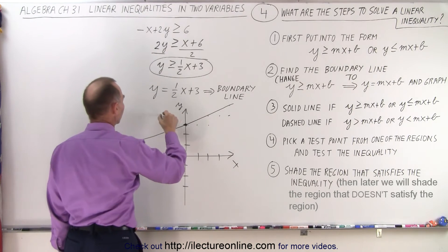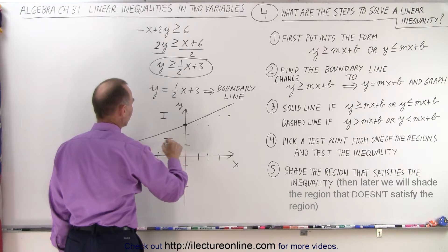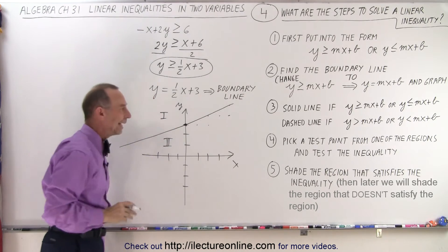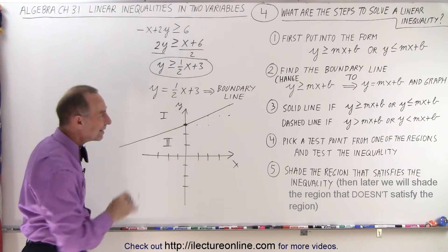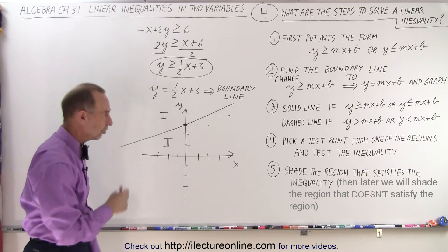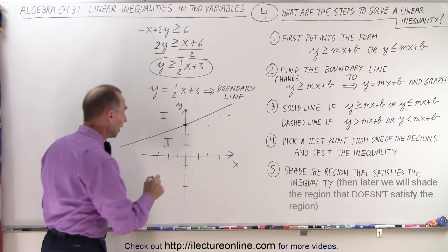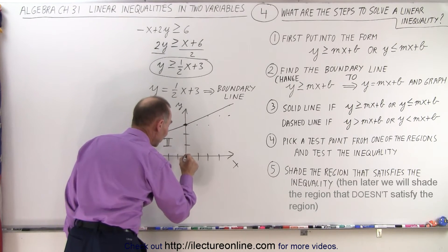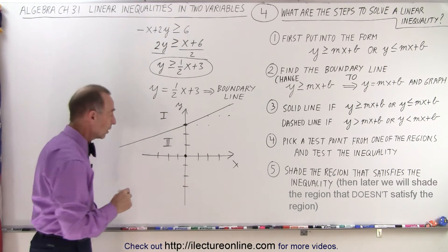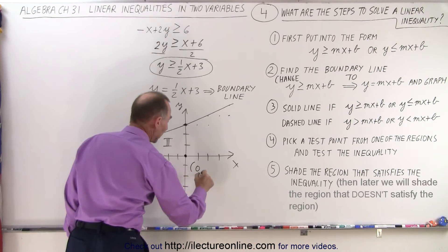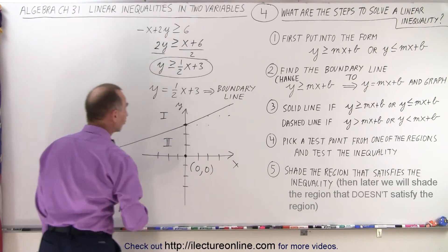Now we have two regions. So let's call this region 1 and let's call this region 2. It doesn't matter which way you call it. And then the next step is pick a test point from one of the two regions, and then test the inequality. And I always like to pick the easy point. I like to pick the point 0, 0 if it's available. So here's the point 0, 0. And we're told to go ahead and do the test.